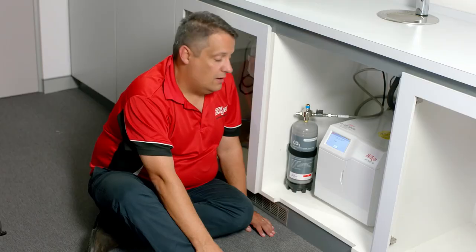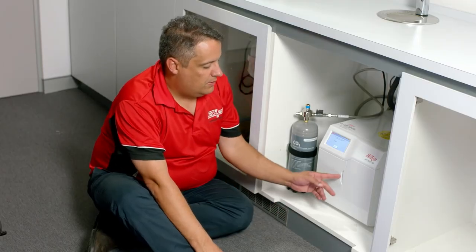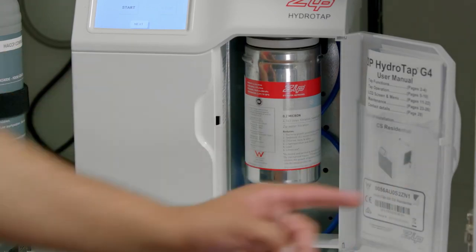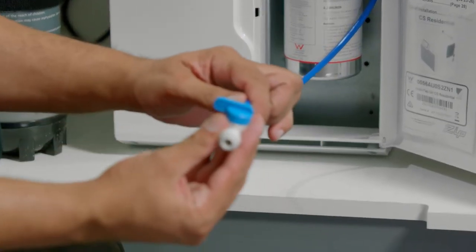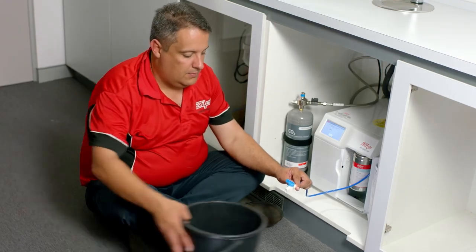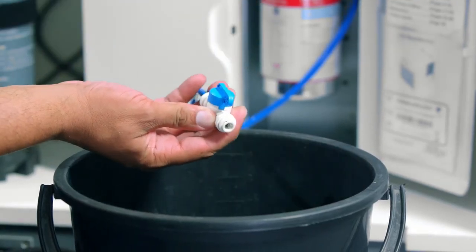The next screen asks you to do a filter flush. Open the filter door on the right-hand side, locate the flush pipe and remove it. Using a bucket, open the stop valve and press start on the LCD.